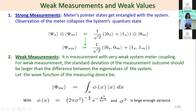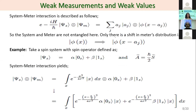In weak measurement, our system does not get entangled; the meter gets some information of the system. The meter gets a very slight deflection, and the standard deviation of this deflection is very large compared to the value itself. This equation shows that the system-meter interaction is described such that after this interaction, the system remains in its state while the meter gets some slight deflection.